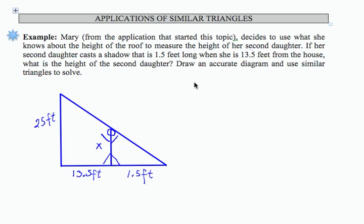Well, let's set up a proportion with the height of the daughter over the length of her shadow. And that's going to equal, so that's this length over this length, is proportional to this length, which is 25, over this length. If I add those together, I get 15 feet.